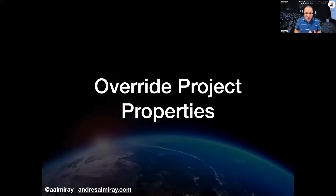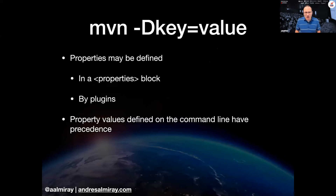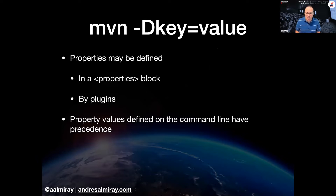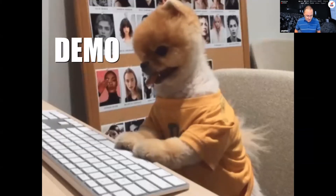The first feature I want to cover is overriding project properties. You can define project properties in a couple of ways — the most typical is using the properties block in a POM file, defining key-value pairs. Plugins also expose parameters as properties: any field annotated with `@Parameter` is visible as a property. You can also define properties on the command line using the `-D` flag to override values already defined or exposed by plugins.